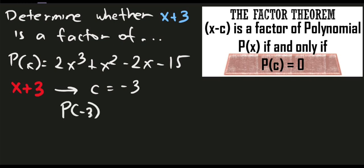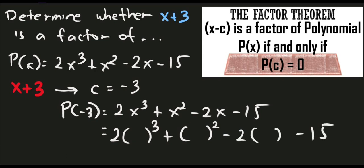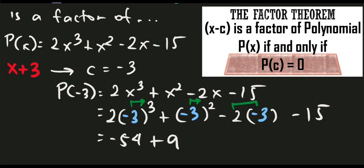So P sub negative 3 equals 2x cubed plus x squared minus 2x minus 15. Changing the value of x to negative 3: we have 2 times negative 3 cubed plus negative 3 squared minus 2 times negative 3 minus 15. That is 2 times negative 27, which gives us negative 54. Next, negative 3 squared is positive 9, so plus 9. Next, negative 2 times negative 3 gives positive 6.